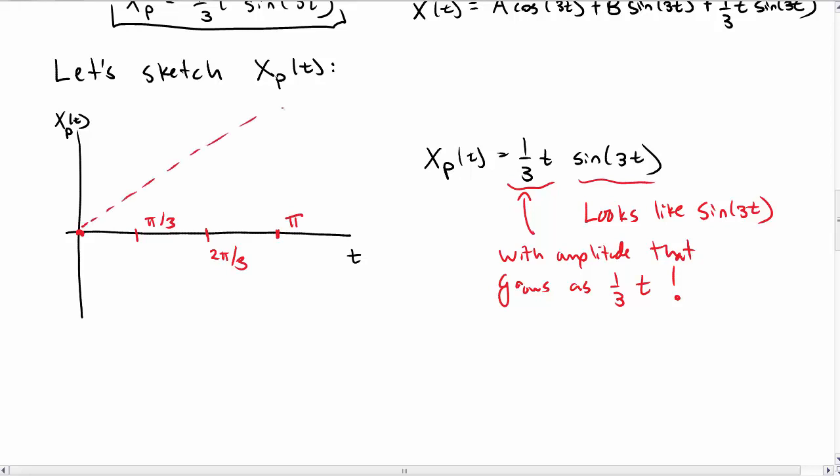Of 1 third t. So sine hits 0 at all those special points, and so the amplitude will grow as t increases.